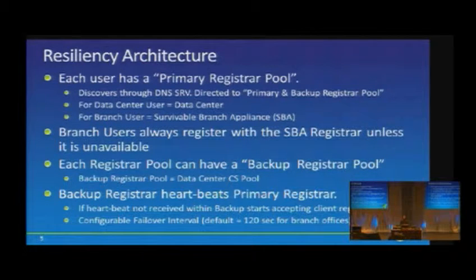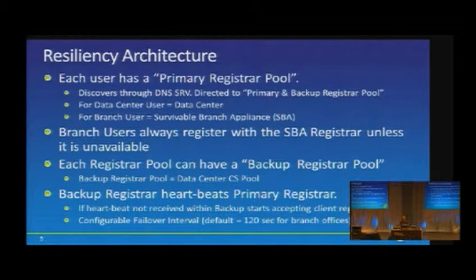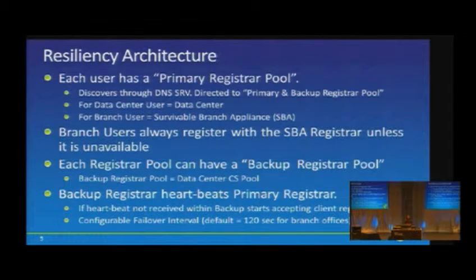This also applies to SBAs — survivable branch appliances. Users in a branch office with an SBA will always have their SBA as the primary registrar point, but will have the enterprise pool at the central site as the backup. In the case of an SBA outage, they'll still be able to access services by going back to the central site pool, assuming the WAN is available. Pool-level failover uses a heartbeat interval defined on those pools — by default, 120 seconds.